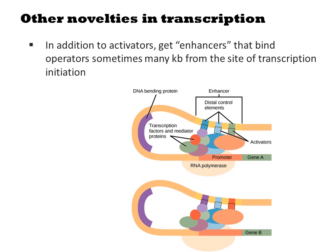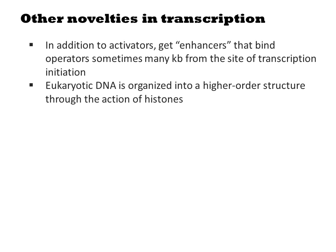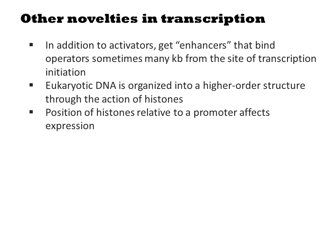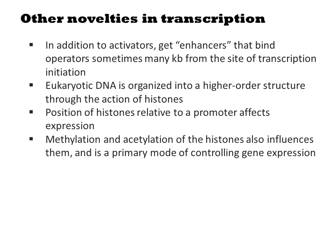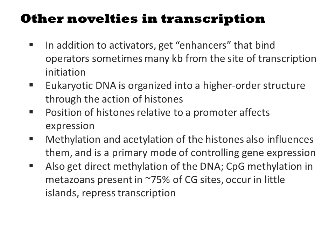There are additional aspects of eukaryotic transcription that aren't exactly unique to them but are far more prevalent amongst them. In addition to activators, there are enhancers that bind operator sites sometimes many kilobases from the site of transcription initiation. Eukaryotic DNA is organized into higher order structure through the action of histones, and the position of these histones relative to a promoter affects expression level. Methylation and acetylation of the histones also influences them, and it's a primary mode of controlling gene expression. There is also direct methylation of the DNA.